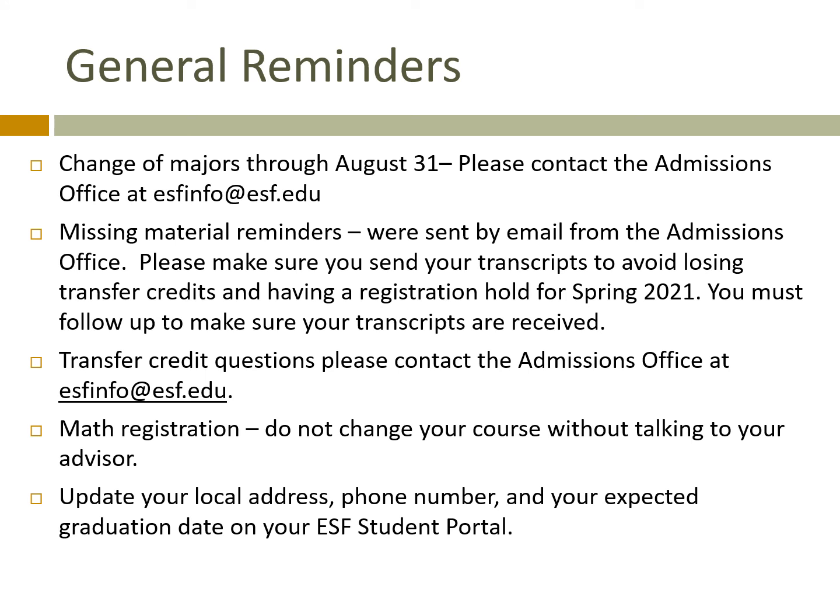If you decide to change your major at any time through August 31st, you can contact the admissions office at ESFinfo@ESF.edu and they will help you. After August 31st, go to the ESF Registrar's webpage and complete the change of major form, which requires several signatures. You may have received an email about missing materials such as final college or high school transcripts — it is your responsibility to make sure those are sent and received. We also must have proof of graduation on file for all students, and a registration hold for spring 2021 will be placed if we do not have proof of high school graduation. Transfer credit questions must go to the admissions office through August 31st; after that, discuss with your advisor.